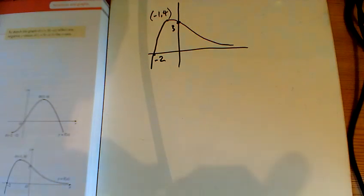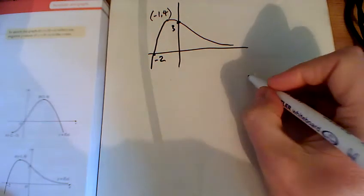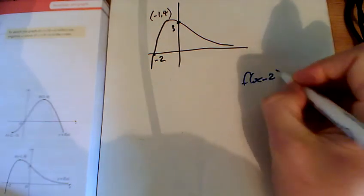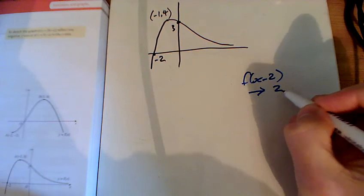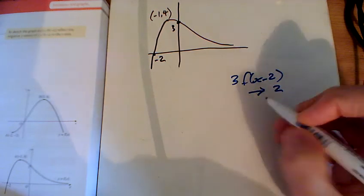So question 2, we've got this graph, and the first one we need to do is f of x minus 2. That's going to translate it two places to the right, and then there's a 3 in front of it as well.